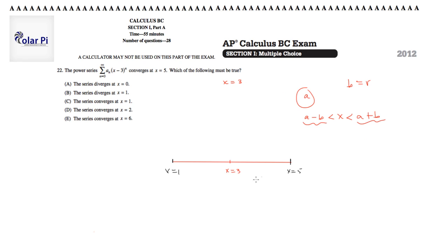So it's clear from a plus b here that the right endpoint is 5, and we know that it converges at that endpoint because we're told so.